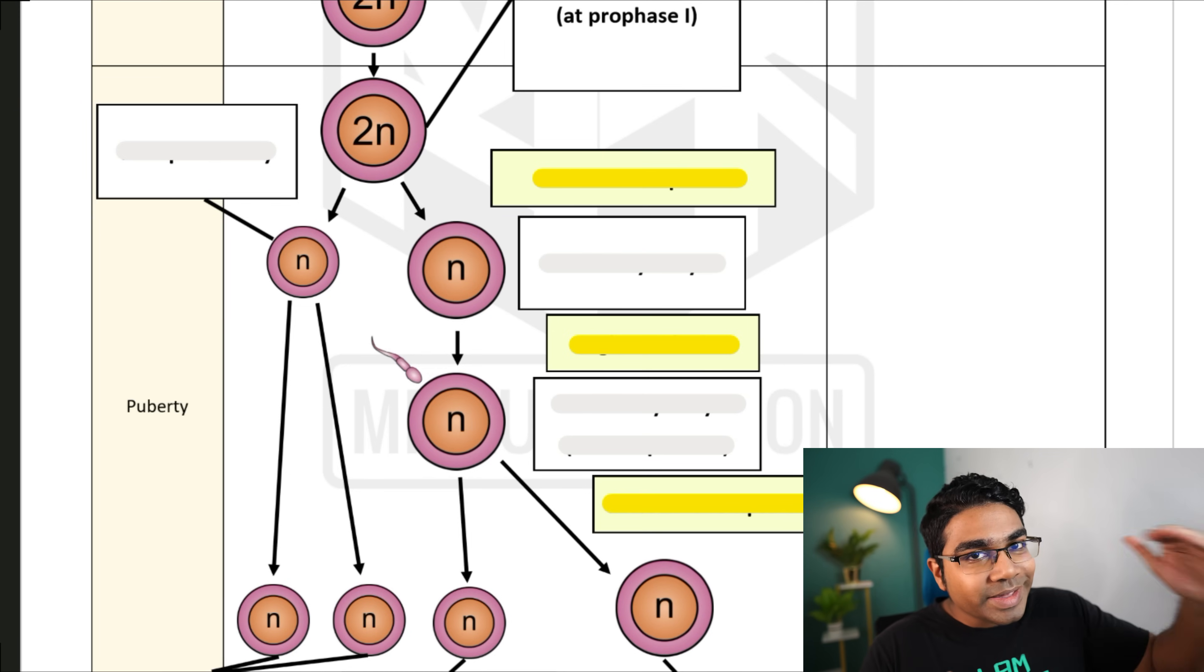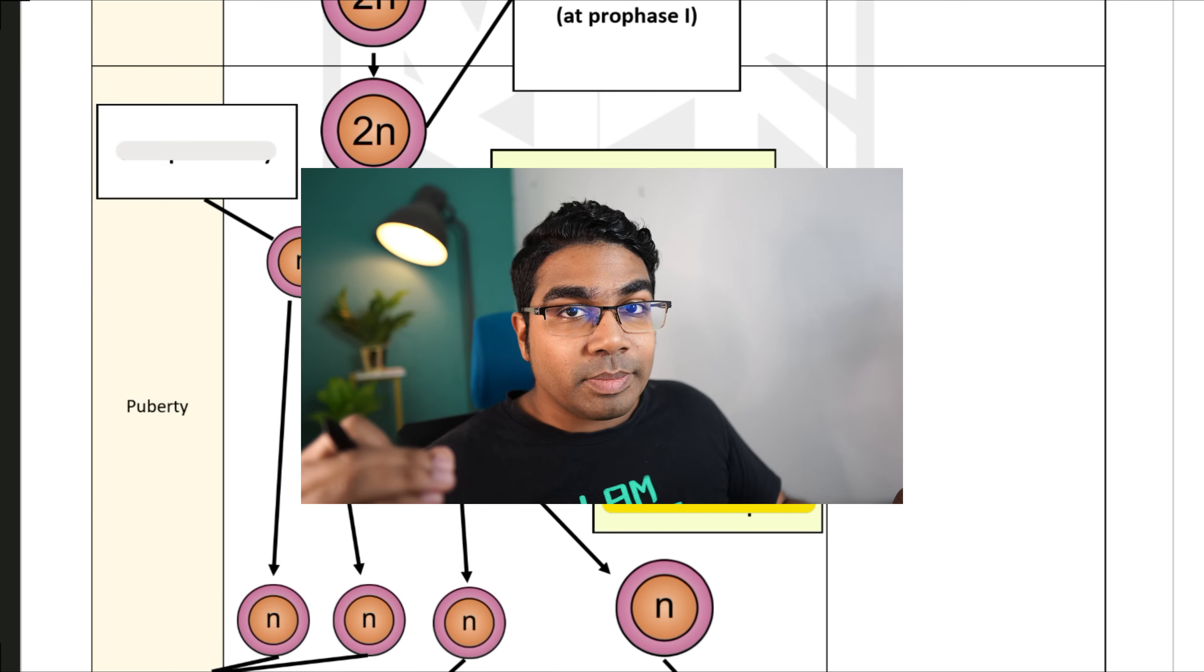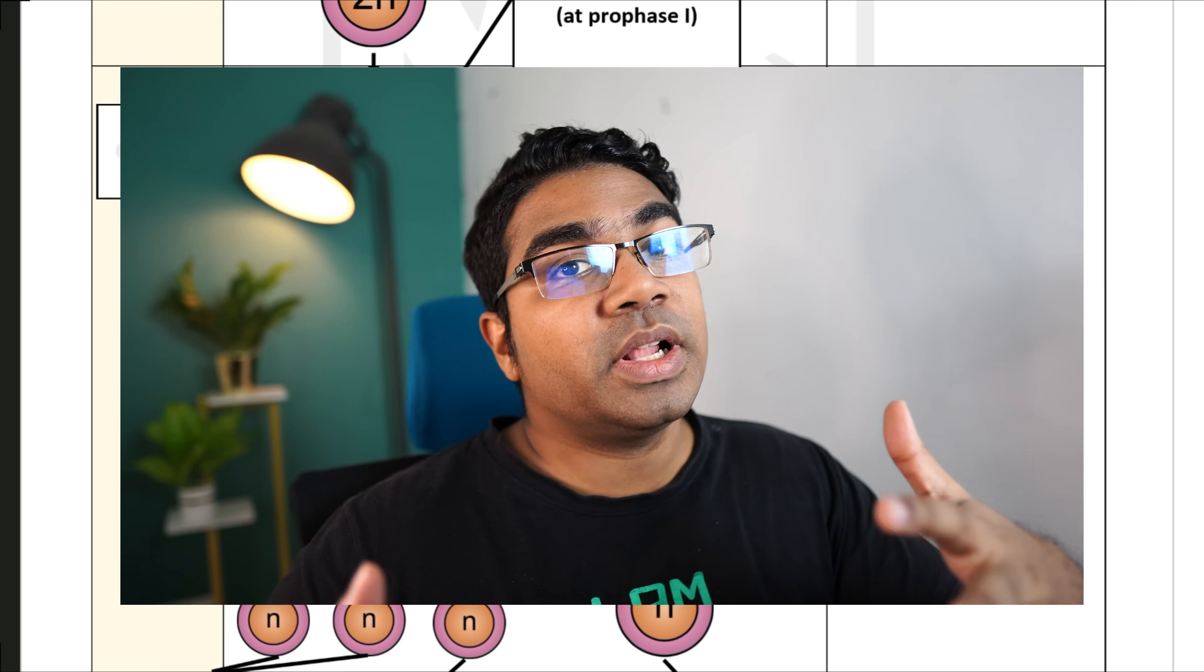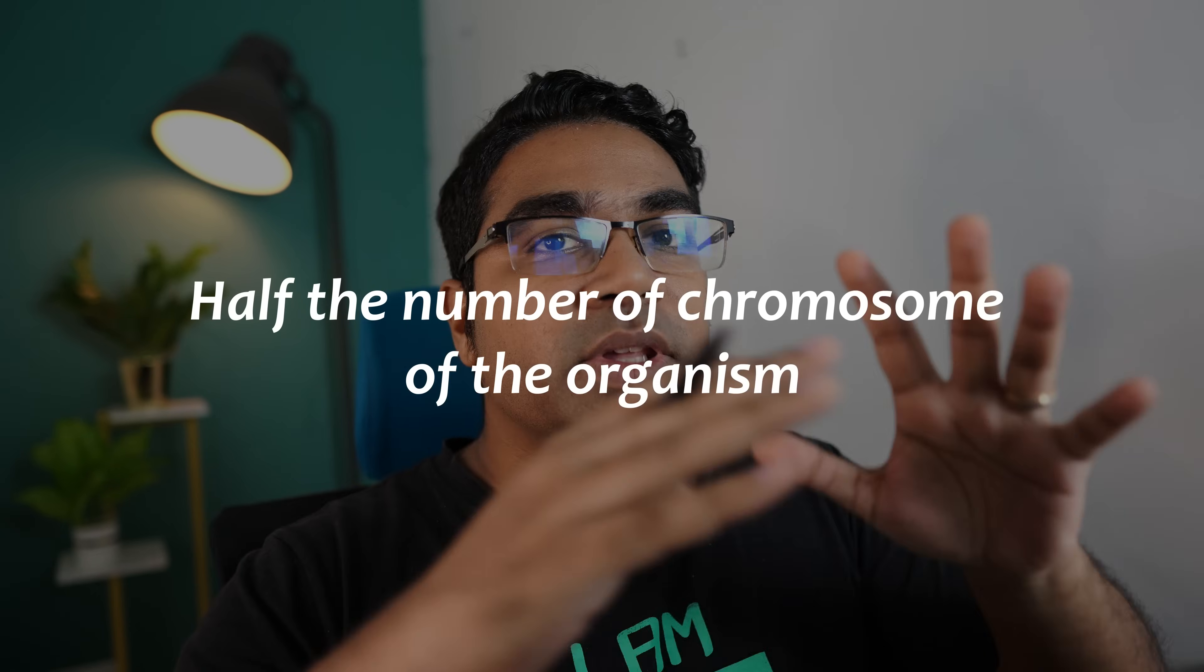However, when puberty hits, then prophase 1 will finally continue on and meiosis 1 will be completed. Once meiosis 1 is completed, we have 2 haploid cells. This is the beginning of the production of haploid cells. A haploid cell contains the haploid number of chromosomes, that is, half of the number of chromosomes of the organism.